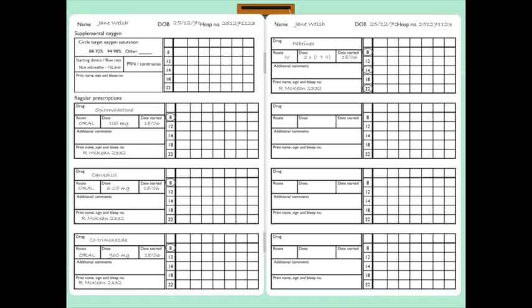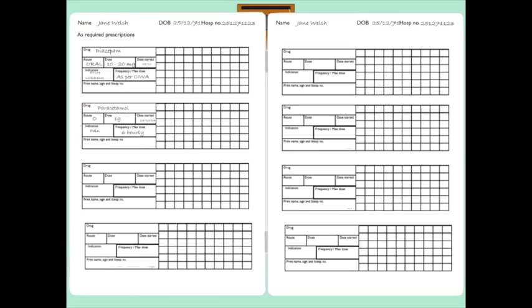So we fill out Jane's prescription chart, continuing her regular medications, ensuring as we've mentioned that the potassium is okay to continue the spironolactone first, and prescribe her Pabrinex like so. So two pairs of vials given intravenously three times a day, stopping the oral thiamine. We send off the bloods and book a non-urgent endoscopy.